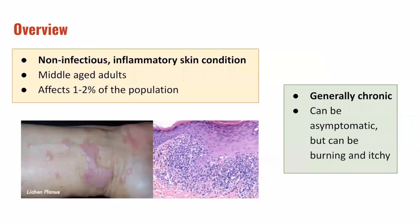In terms of an overview of lichen planus, it is a non-infectious and inflammatory skin condition affecting predominantly middle-aged adults, and affects 1–2% of the population. Here we can see images on the lower left side of the screen demonstrating some classic images of lichen planus on extensor surfaces of the wrists. Lichen planus is a generally chronic condition. It can be asymptomatic, but it can also be symptomatic and present with burning and itchy sensation.